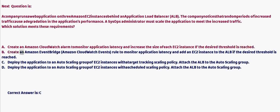Option B: Create an Amazon EventBridge (CloudWatch Events) rule to monitor application latency and add an EC2 instance to the ALB if the desired threshold is reached. Option C: Deploy the application to an Auto Scaling group of EC2 instances with a target tracking scaling policy. Attach the ALB to the Auto Scaling group.